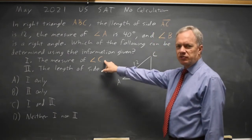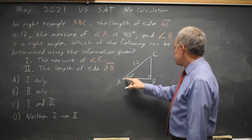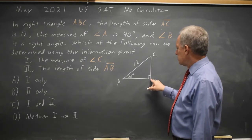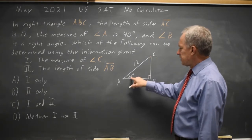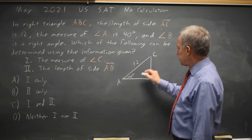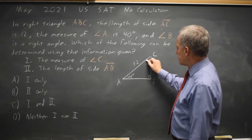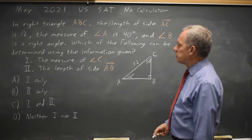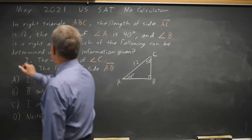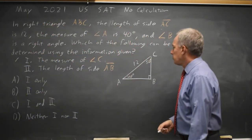can we determine the measure of angle C from this? And the answer is, the angles of a triangle add up to 180, so A plus C adds up to 90. A is 40, so C is 50 degrees, meaning that we can determine the measure of angle C. The length of side AB.